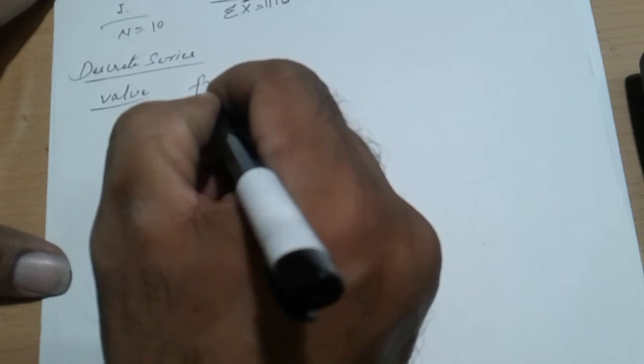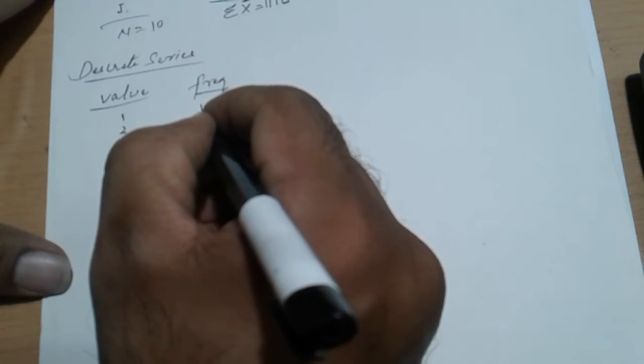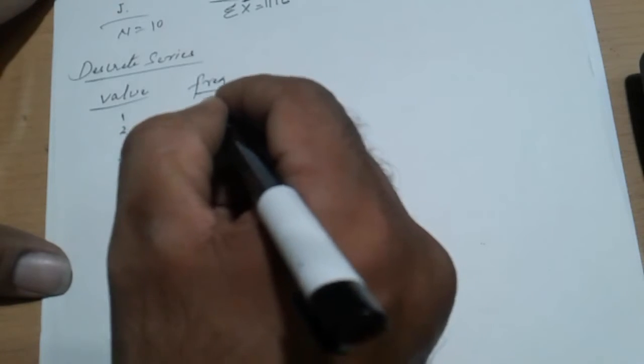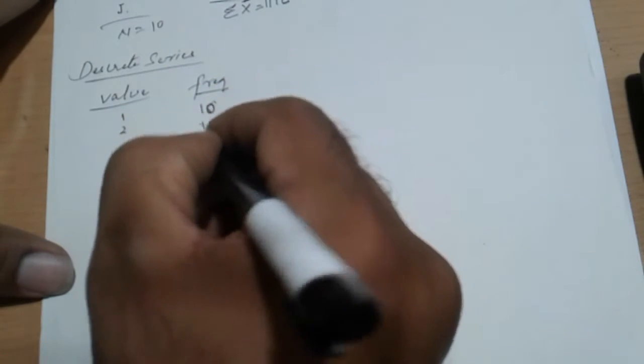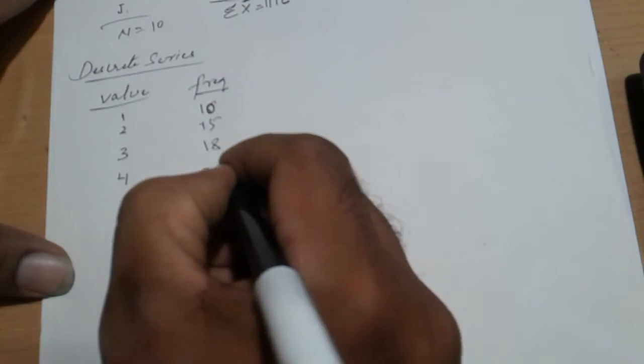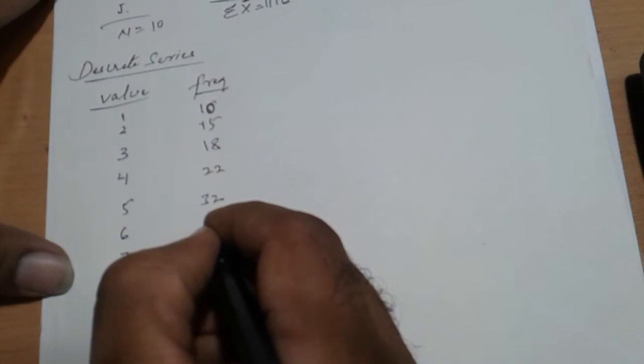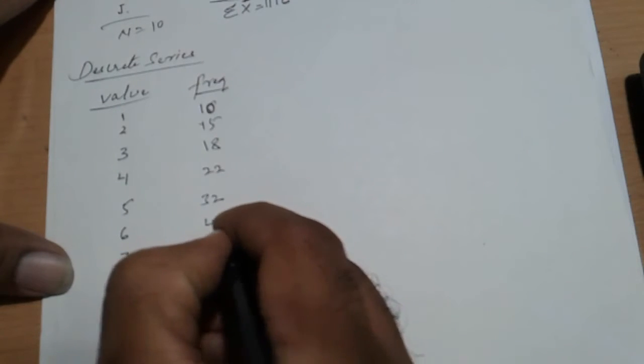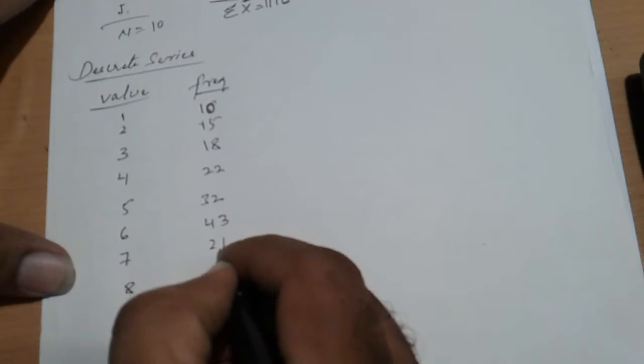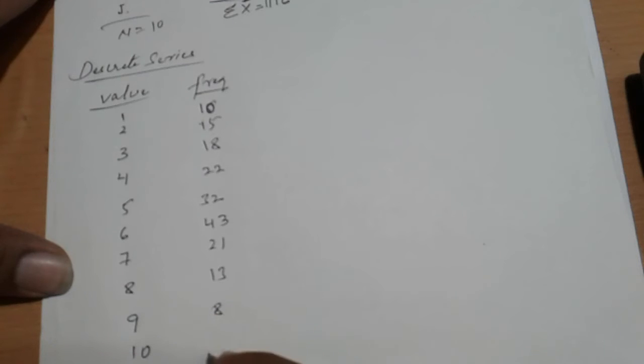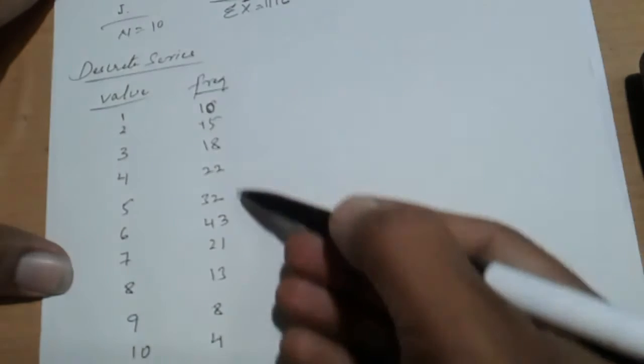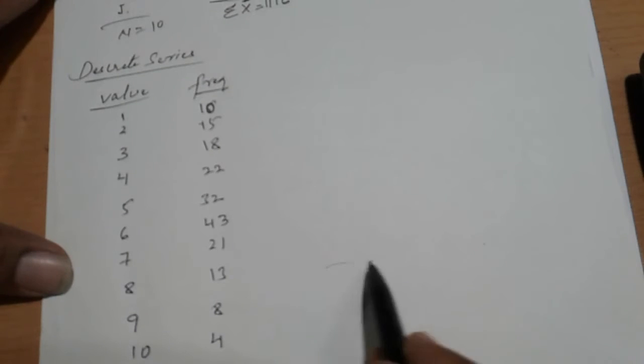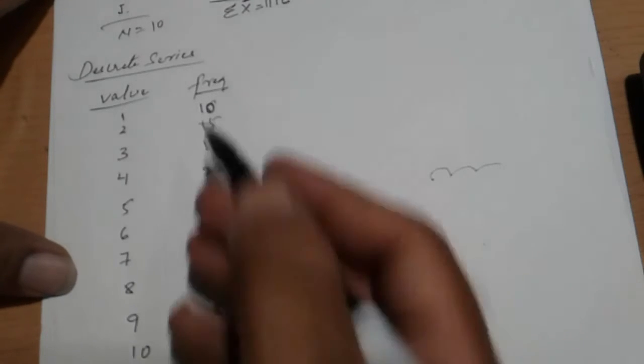So let's start the value with 1, 2, 3, 4, 5, 6, 7, 8, 9, and 10. Now frequency - frequency should be increase and decrease. Frequency starts with 10, 15, 18, 22, 32, 43, then suddenly decrease to 21, then 13, then 8, then 4. This frequency should increase and decrease, meaning fluctuation. Like this one - fluctuation. That is known as frequency.